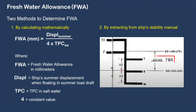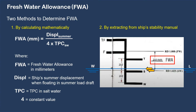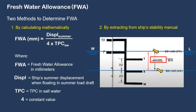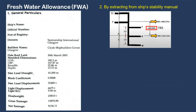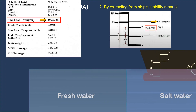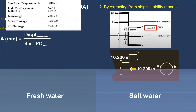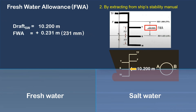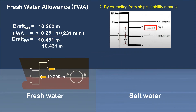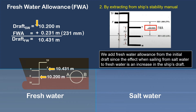This is an example of freshwater allowance found in the stability booklet. When the waterline is on the top of the S load line mark in saltwater, and the ship arrives in freshwater, the waterline moves to the top of the F load line mark. The change in draft is 231 millimeters. From the general particulars, the ship has a summer load draft of 10.200 meters. By adding 231 millimeters (0.231 m) to her summer draft, her arrival draft in freshwater is 10.431 meters. We add the freshwater allowance since sailing from saltwater to freshwater causes an increase in draft.